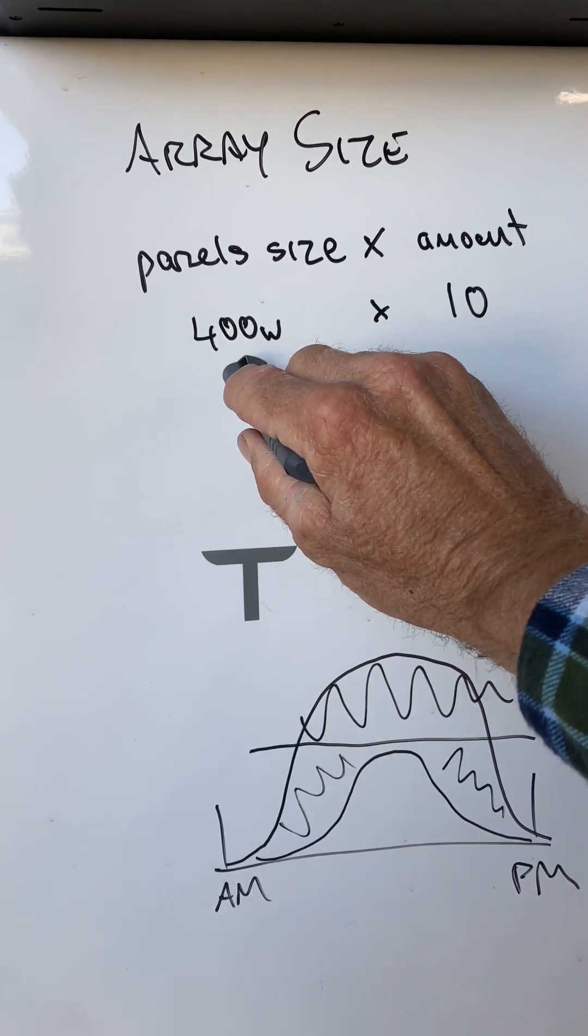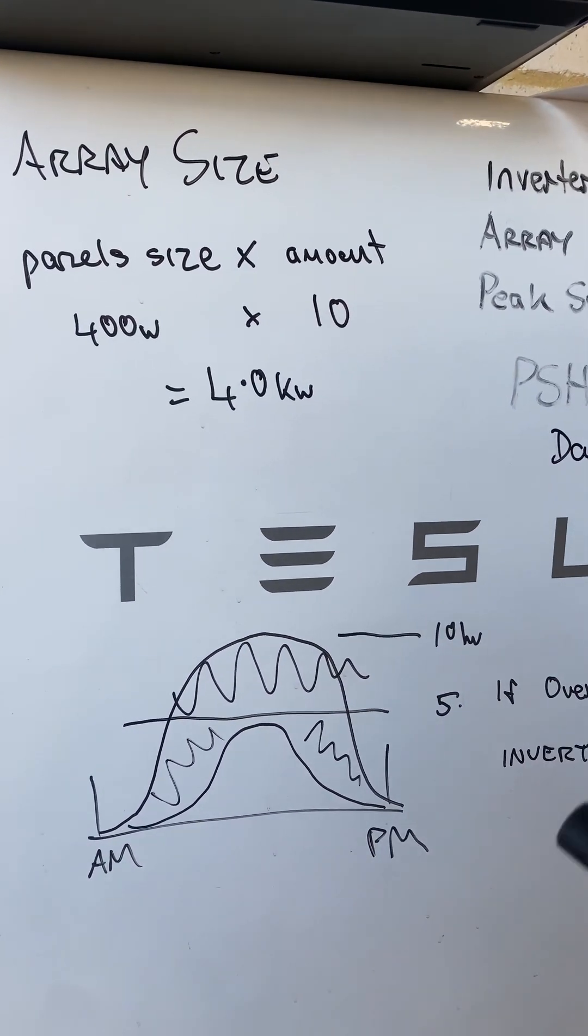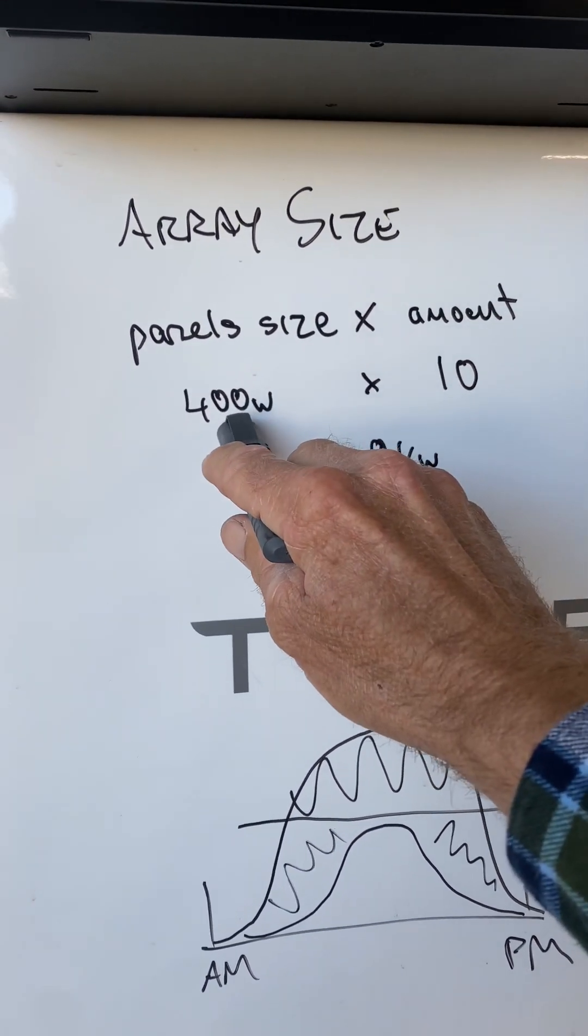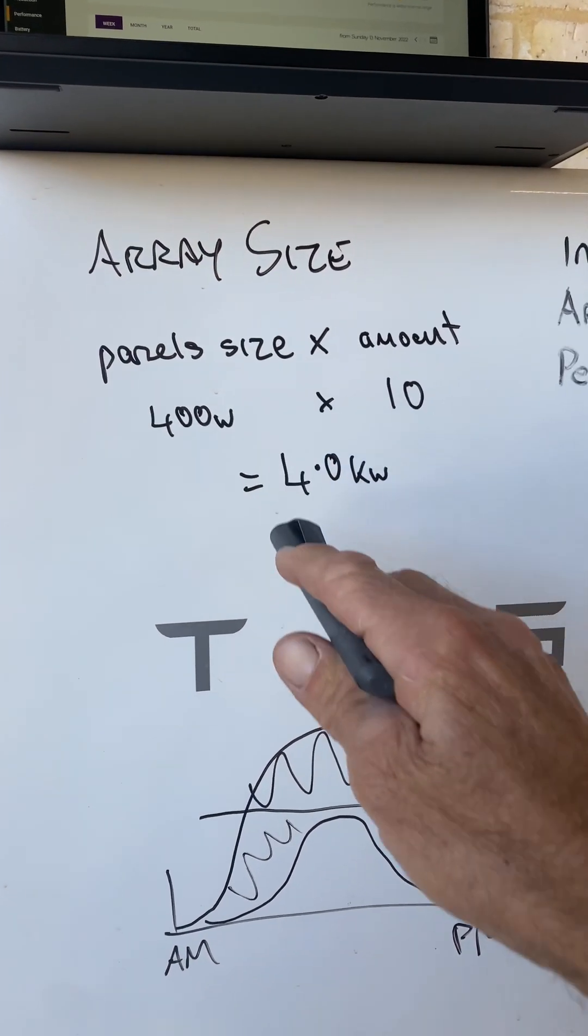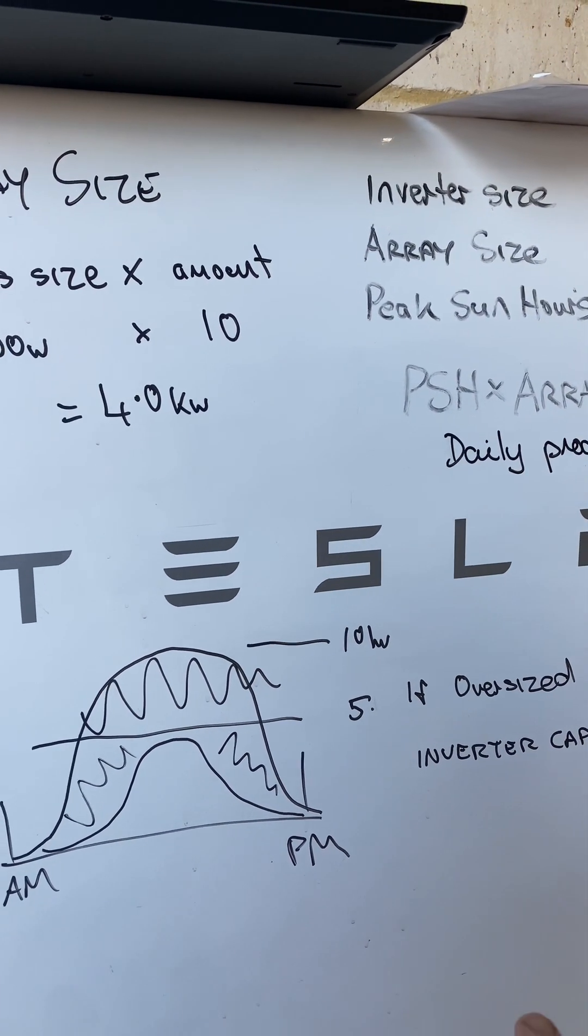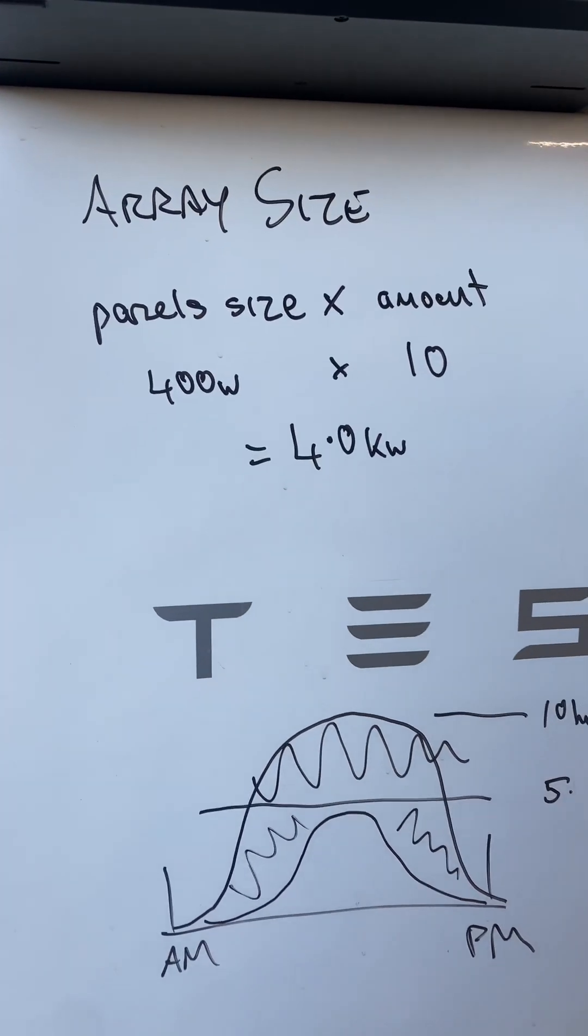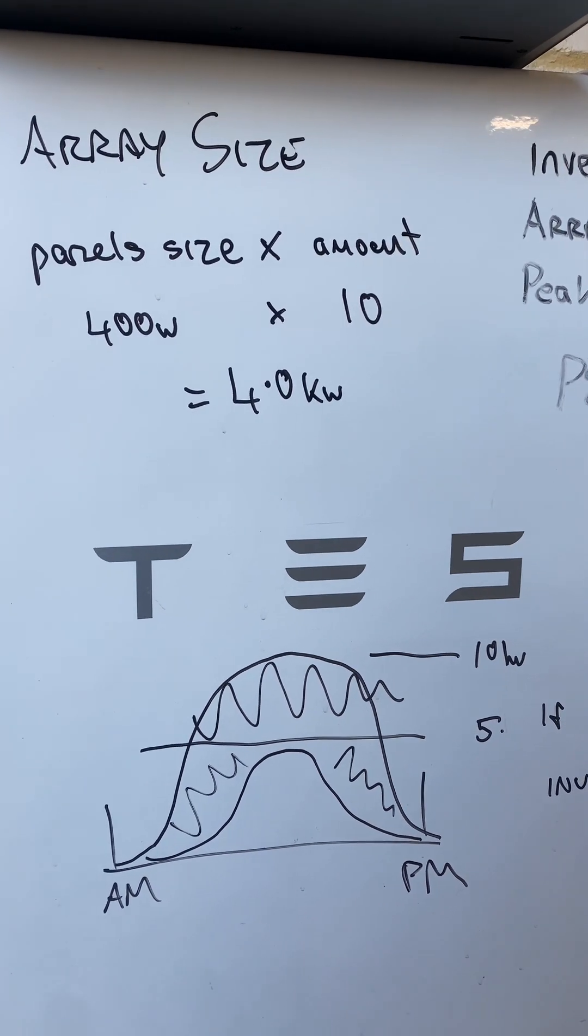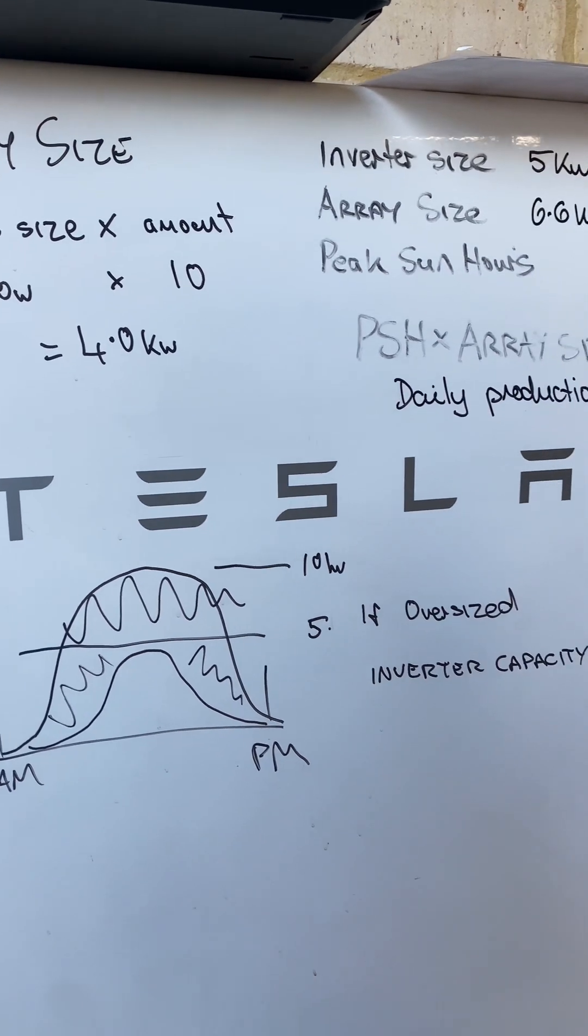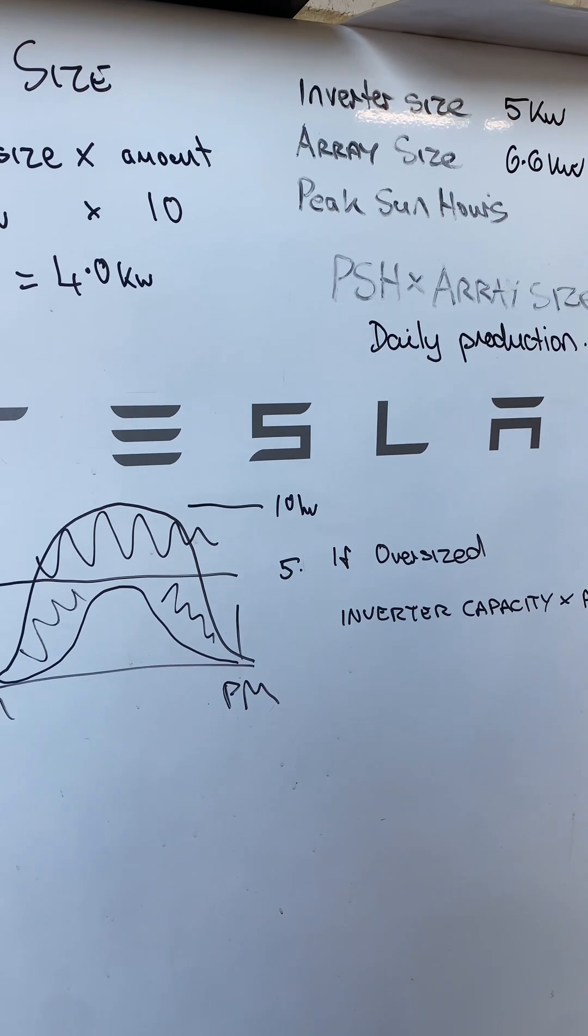So you need to work that out for your particular system. Now, to get the solar system size, that information should be on your receipt, or your design from your retailer, whoever sold you the system. If you don't know what size your solar panels are, you can get up on the roof and use your smartphone and poke it under the panel and get a photo of the label on the back of the panel, which will tell you the wattage amongst many other electrical characteristics of that particular solar panel. So that's the manual way of doing it, to work out whether your solar system is working as it should be.